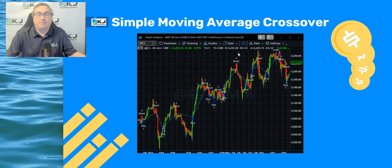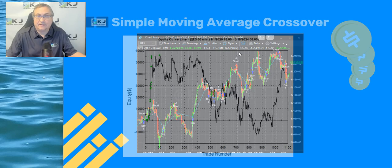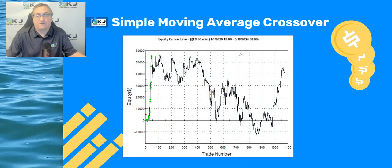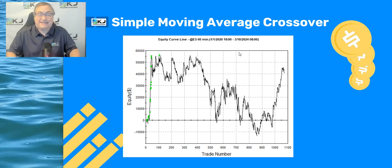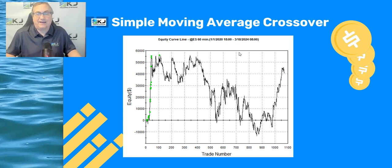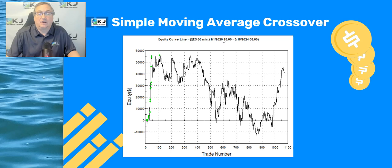Here's a simple moving average crossover system — we've all seen these systems — and here's the equity curve for it. It makes money in the end, but it also had about a $60,000 drawdown. Nobody in their right mind would probably trade this if they saw this backtest. It also has almost 1,100 trades in a little over four years.